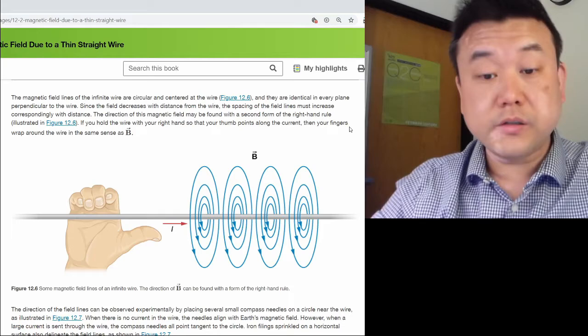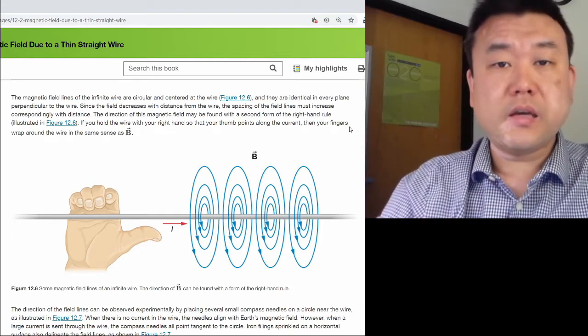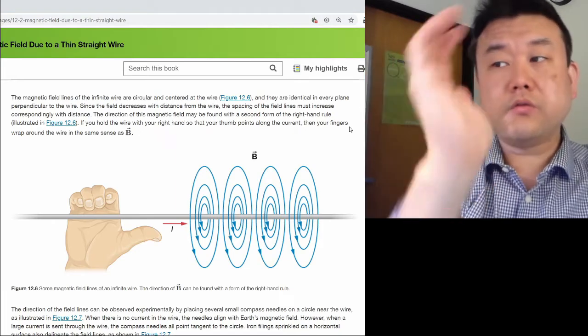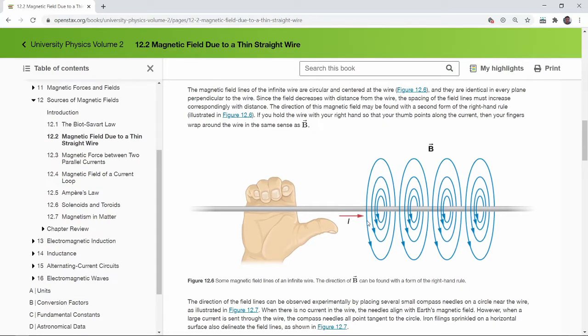So that's what you will see. That's what this second form of right hand rule quickly shows that given the direction of current, what direction do magnetic fields go in. You can verify that these directions are correct by using the first form of the right hand rule and the cross product that you have seen with the Biot-Savart law.